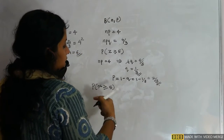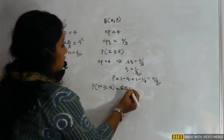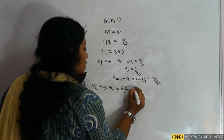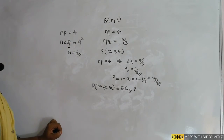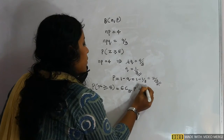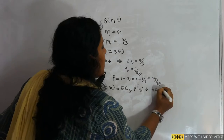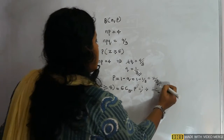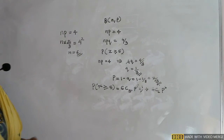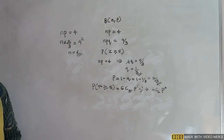P(X ≥ 5) = 6C5 · p^5 · q^1 + 6C6 · p^6 · q^0. Substituting p = 2/3 and q = 1/3: that is 6C5 · (2/3)^5 · (1/3) + 6C6 · (2/3)^6.